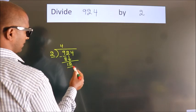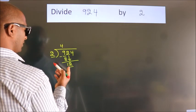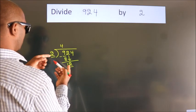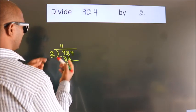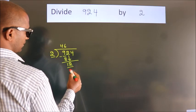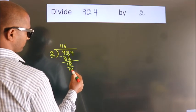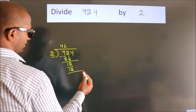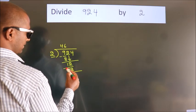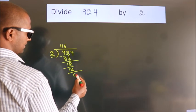So, 12. When do we get 12 in the 2 times table? 2, 6, 12. Now we subtract. We get 0.